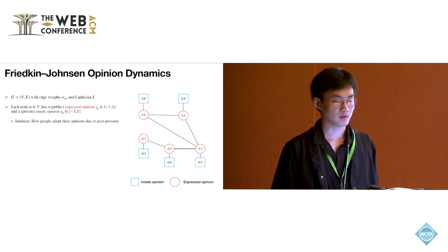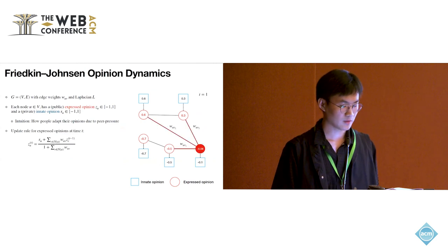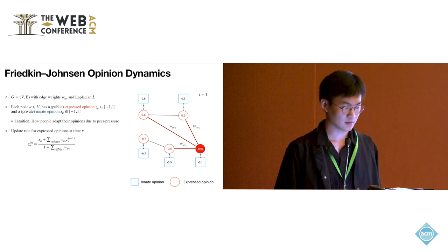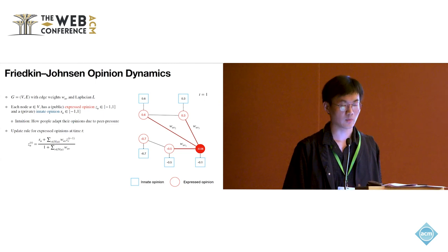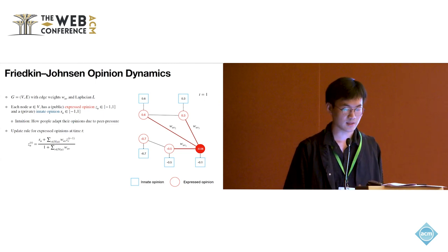The intuition behind the FJ model is how people adapt their opinions due to peer pressure. Individuals' expressed opinions are updated iteratively. So at each time step t, zu is updated based on the weighted average of the expressed opinions of the neighbors and its own innate opinion.